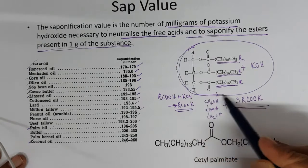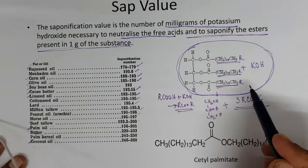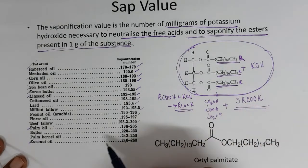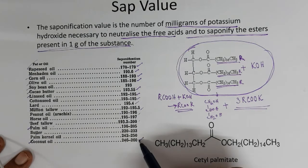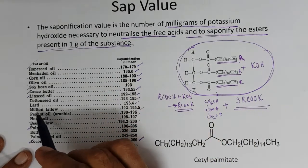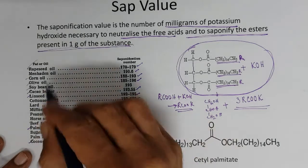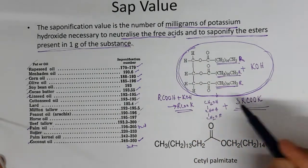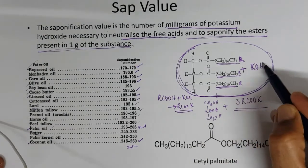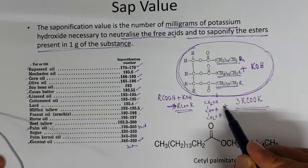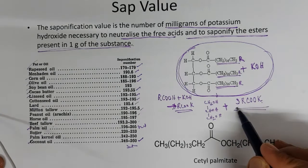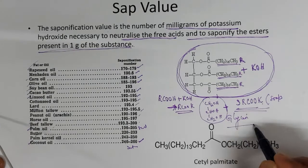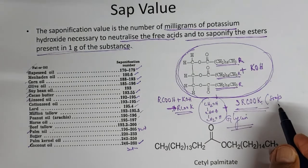This is a triglyceride — all vegetable oil is a triglyceride of fatty acids. Coconut oil has all saturated fatty acids, and palm oil is also saturated, but others like olive oil have unsaturated fatty acids. When a triglyceride reacts with potassium hydroxide, it gives R-COO-K, which is soap, and glycerin. This is a saponification reaction producing soap and glycerin.